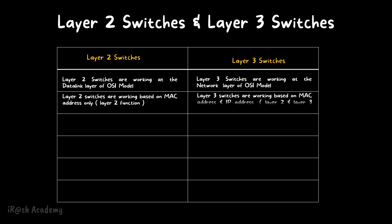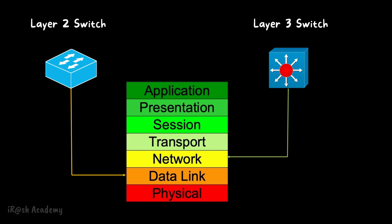Point number two: layer 2 switches work based on the MAC address only in layer 2 function, but layer 3 switches work based on both MAC address and IP address — that means they work in layer 2 and layer 3 function. A layer 2 switch works with MAC addresses only and does not care about IP address or any item of higher layers of the OSI model. In layer 3 switches, they can do all the job of a layer 2 switch plus additional static routing and dynamic routing as well.